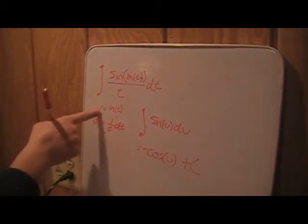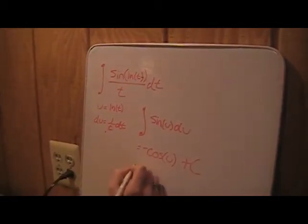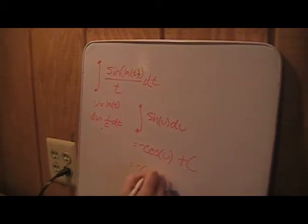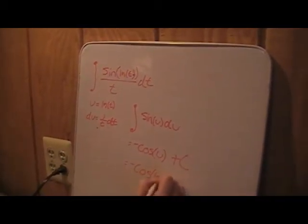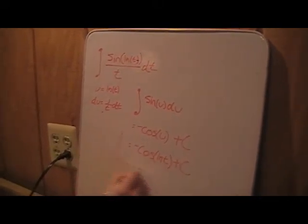So now we have to substitute u back in, so we get negative cosine of the ln of t plus c. And that's your answer.